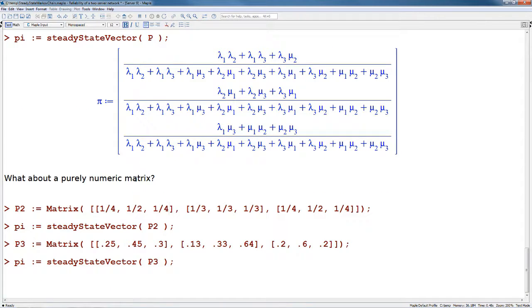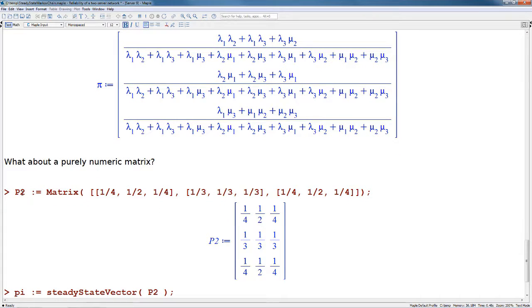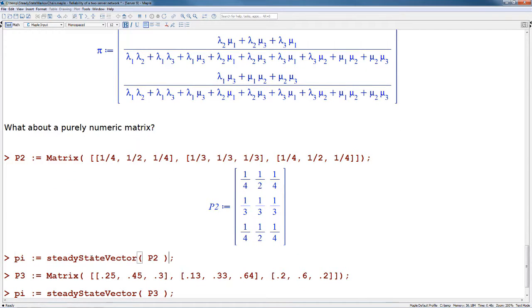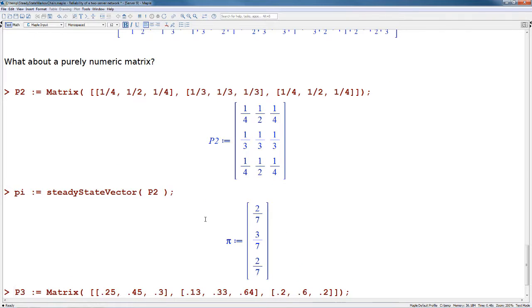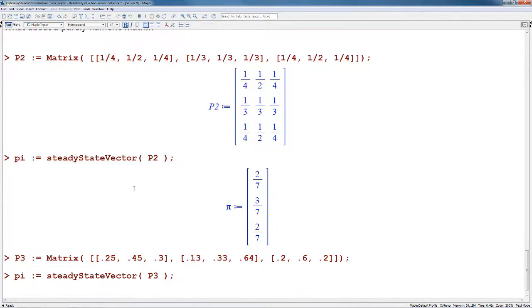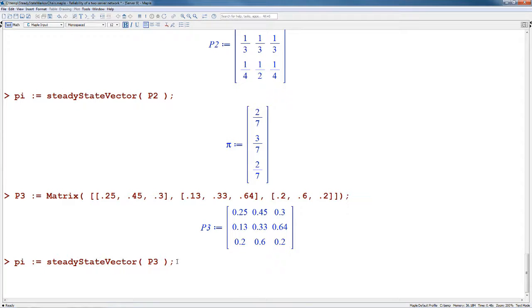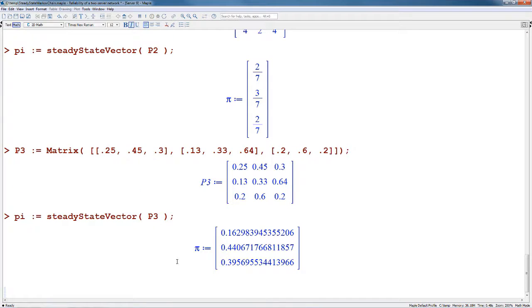What about a purely numeric result? If we create a new matrix P2 filled with numeric values instead of symbolic values, we can again use the steadyStateVector command to generate the steady state vector. If we use floating point values rather than fraction values in a new matrix called P3, computing the steady state vector for P3 will give us back floating point results. As we saw before, everything adds to 1 and this returns the steady state vector.